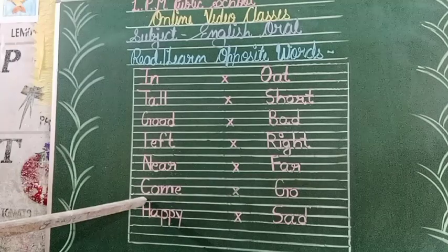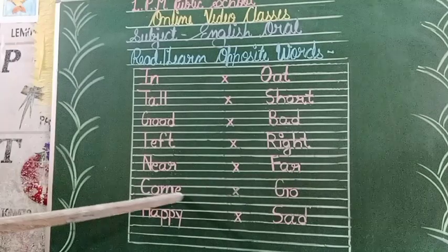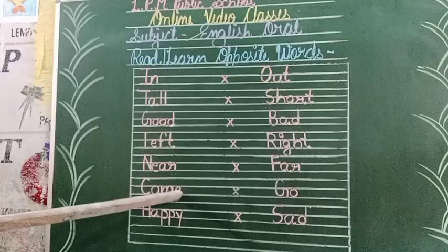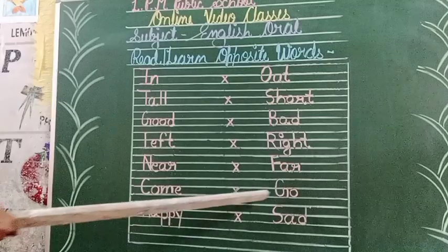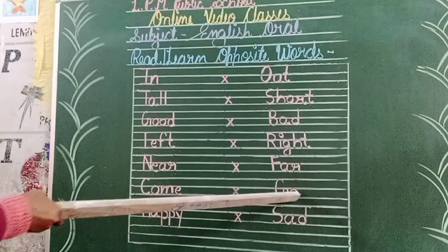Spelling of 'come': C-O-M-E, come. C-O-M-E, come. Spelling of 'go': G-O, go.